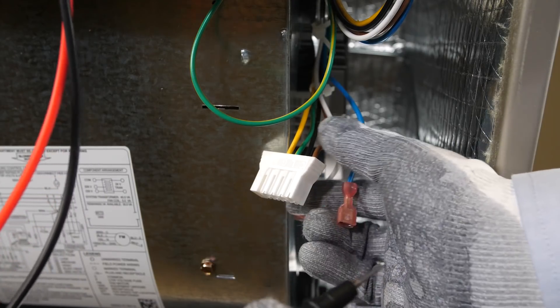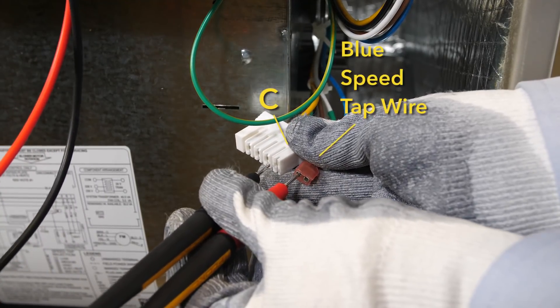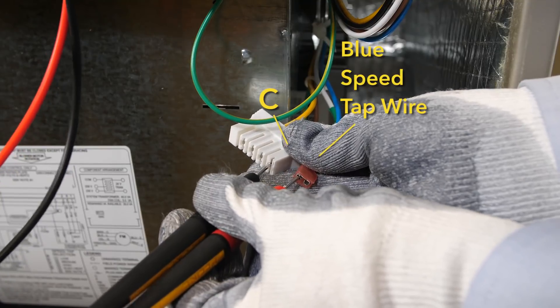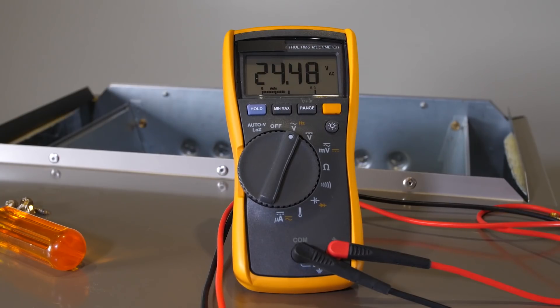Check low voltage power between C on the white plug and the blue speed tap wire. Confirm that you have 24 volts AC.